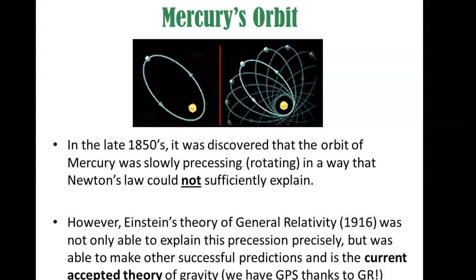This is called the precession of the perihelion of Mercury. Of course, what they did at the time was try to use Newton's law to explain this. They said maybe the orbit of Mercury is rotating because of all the other planets and the sun pulling on it, so they did their calculations. And it would account for some of it, but not to the degree that would completely explain their observations — Newton's law could explain most of it, taking into account all the other planets, but not completely.